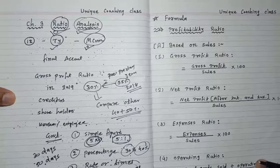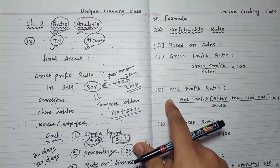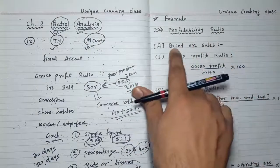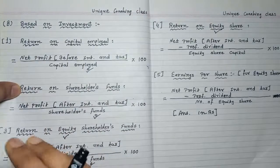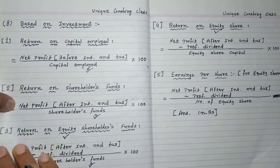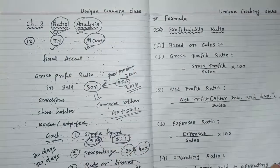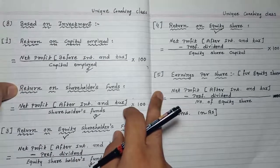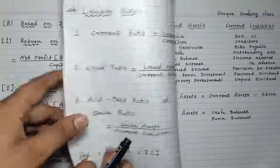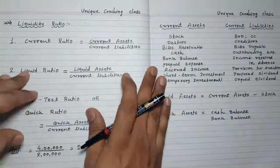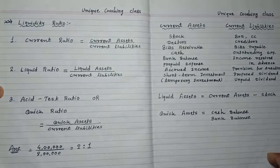Hello, good morning students. In the previous two videos we learned about profitability ratios based on sales and based on investment. Our profitability ratio topic is now completed — remember, there are four formulas in one part and five in another, totaling nine formulas. Today we are going to learn liquidity ratios.